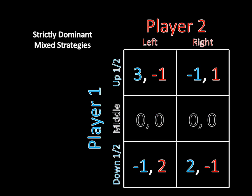So, how about if player one plays up with probability one-half and down with probability one-half? If player one is doing that and player two is going left, then half the time he earns three and half the time he earns negative one, which averages out to one. That one is worth more than the zero that player one would get from playing middle. So that mixed strategy is better than middle when player two is playing left. How about right? If player one keeps the same mixed strategy and player two plays right, then half the time player one gets negative one and half the time he gets two, averaging out to positive one-half. That positive one-half is also better than middle, which is worth zero.